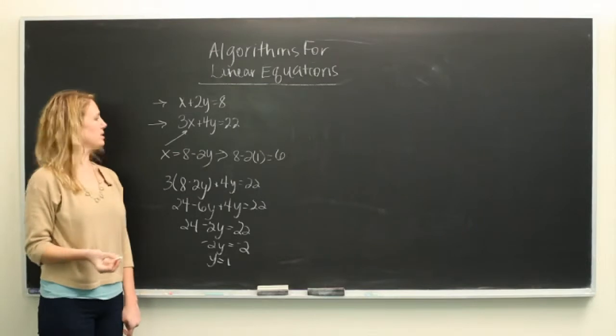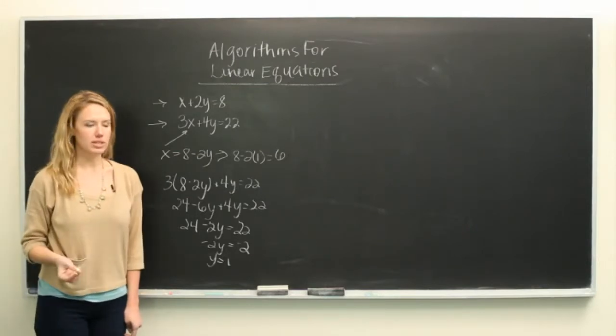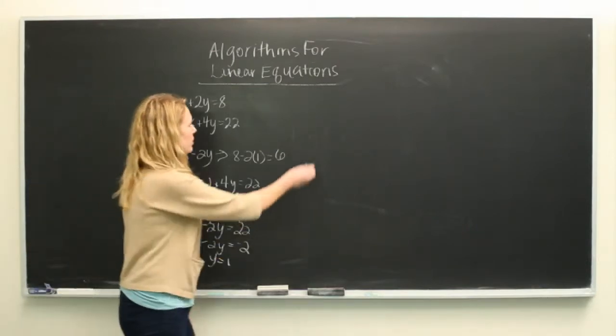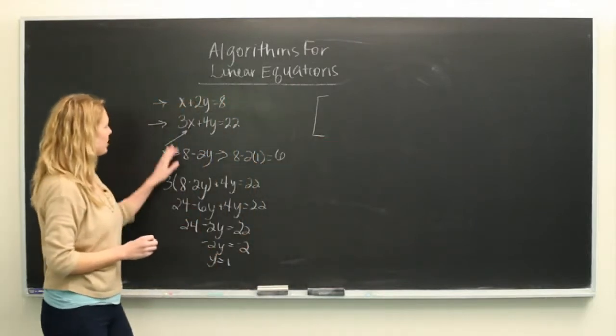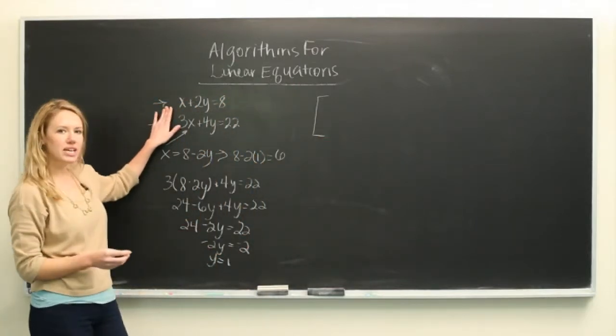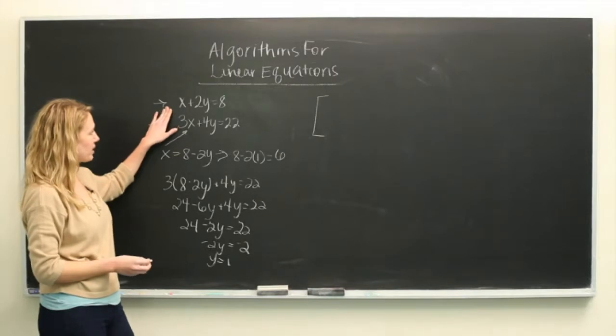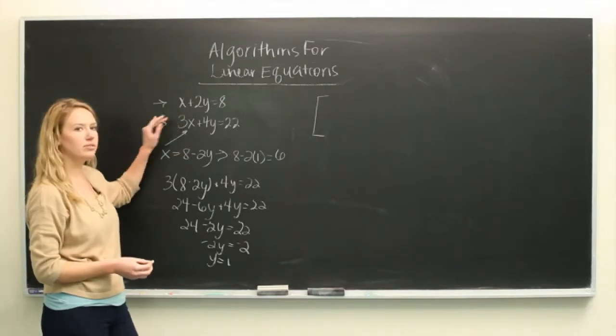So another way to do this is to use matrices. What we're going to do is write a matrix that has what's on the left-hand side of the equal signs, and how we're going to do this is just fill in the coefficients.